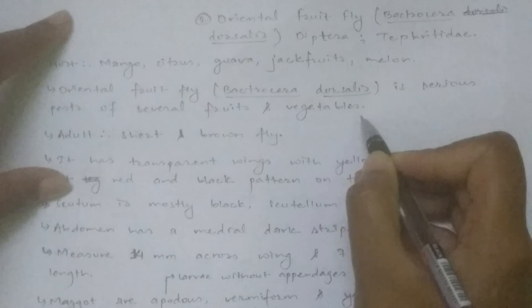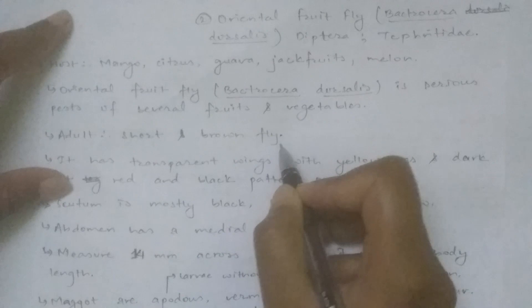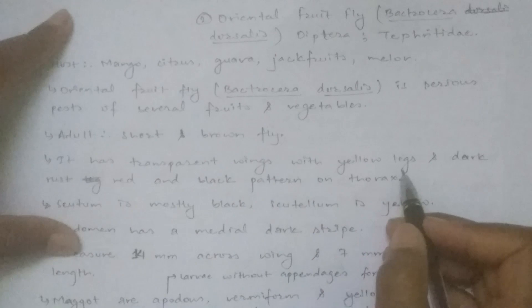Bactrocera dorsalis is a serious pest of several fruits and vegetables. The adult is a short, brown fly with transparent wings and yellow legs.